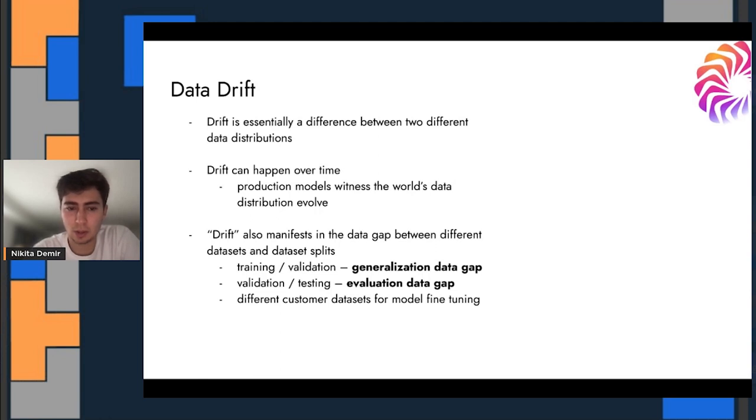This can also happen between different data set splits. For example, not necessarily just over time, but in a given training environment, you could have a difference between the training and validation splits and that you could call a generalization. So the generalization data gap, that could be an example of a gap between your understanding of how the model is going to generalize to actual real-world data. The difference between validation and testing, that could be called an evaluation data gap because that's essentially the gap between what you think are good metrics maybe on the validation data. But then if testing is similar to your production, the gap could be indicative of undefined behavior when it comes to actual production time.